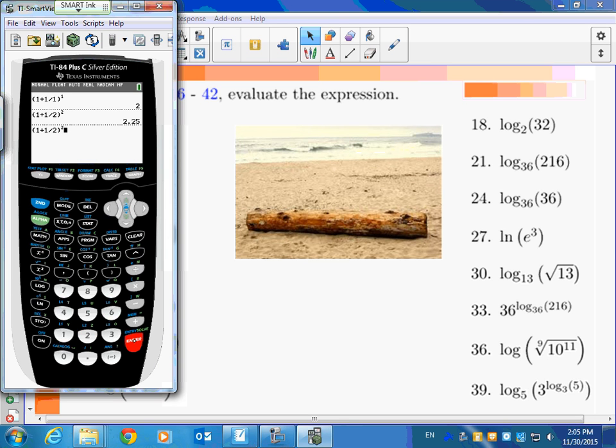Now change that X to a 2. We're going to go 1 plus 1 over 2 to the 2. What do you think that's going to be? It's 2.25. Let's make it a 5 this time. Is this just going to keep getting bigger and bigger? Well it does, but it's going to get bigger slower now. It's going to kind of take a while. I'm going to do a 9 this time.